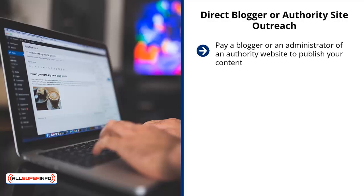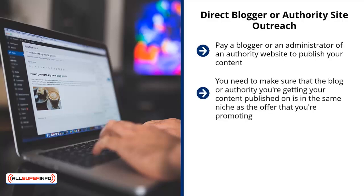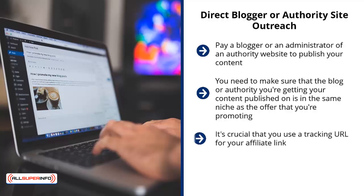Direct blogger or authority site outreach: pay a blogger or administrator of an authority website to publish your content. Your content has links in it — the link can go to a redirect domain, an intermediary page, or directly to your affiliate sponsor. Make sure the blog or authority site is in the same niche as the offer you're promoting. Ask for a test buy and negotiate your best price. It's crucial that you use a tracking URL for your affiliate link, and you should tie it with a redirect domain so you can tell where your traffic is coming from.